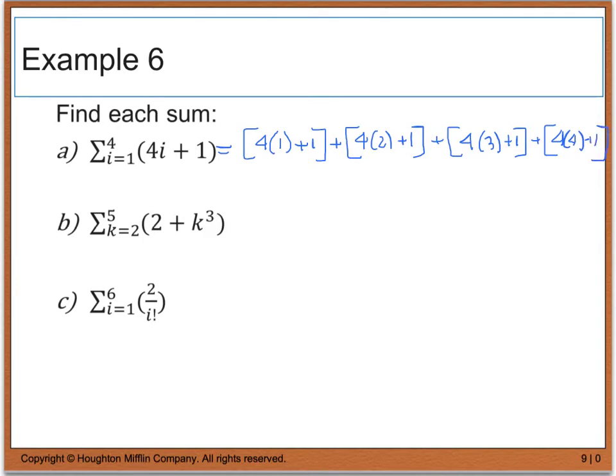Now when I simplify these, I end up with 5 plus 9 plus 13 plus 17, and this will give us 44.